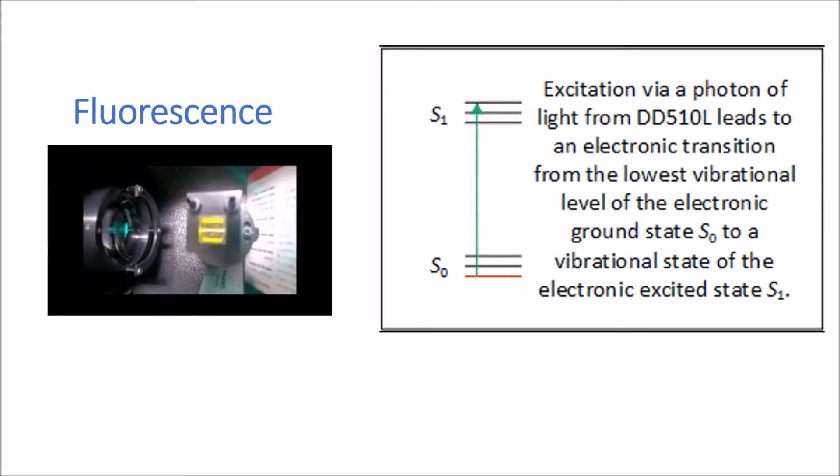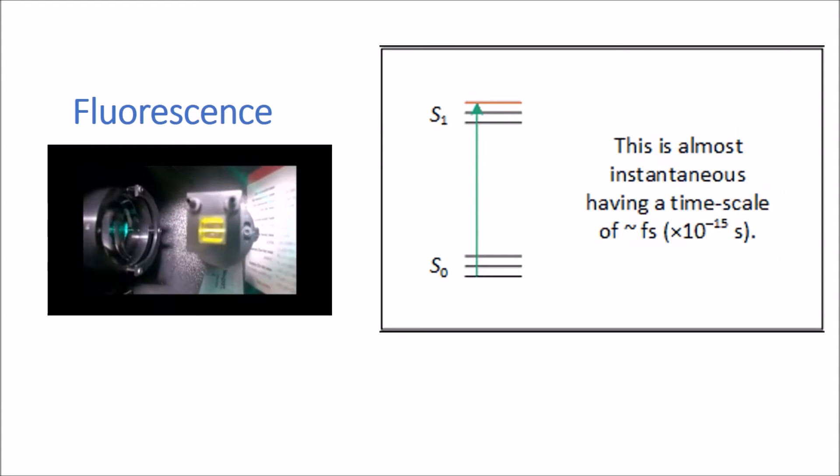If we excite a Rhodamine 6G molecule using our delta diode 510 laser, we can promote an electron from its lowest vibrational level of its ground state to its electronic excited state. More than likely, it'll be excited to a higher vibrational level of the electronic excited state. Excitation is a relatively instantaneous process occurring in about the femtosecond regime. That's 1 times 10 to the minus 15 seconds.